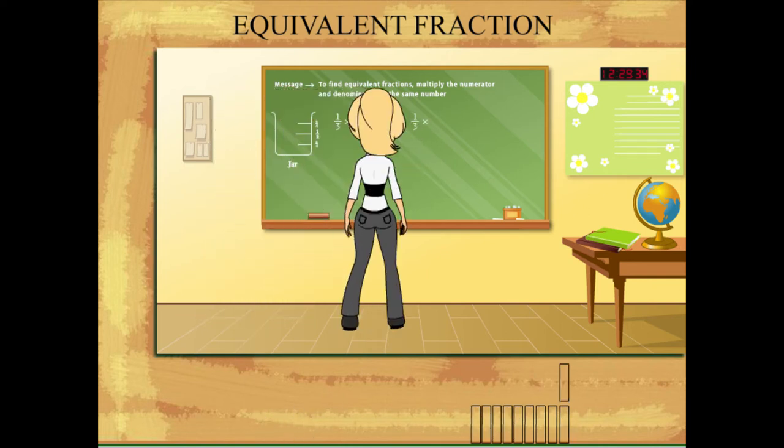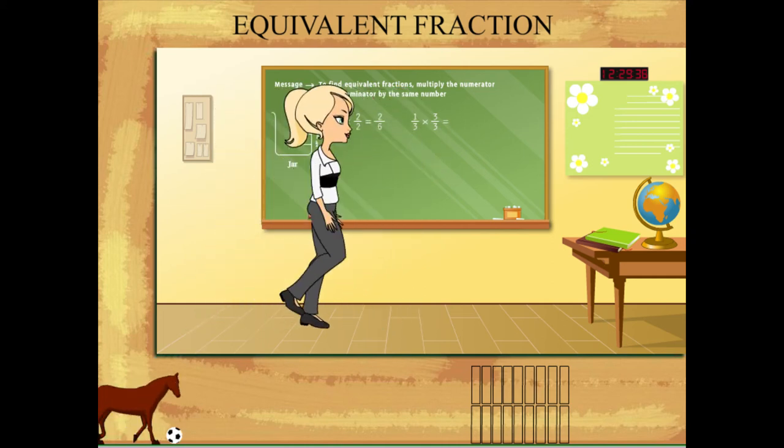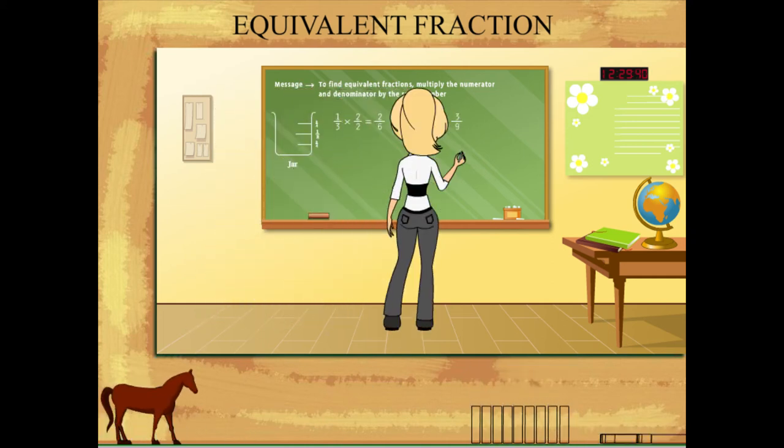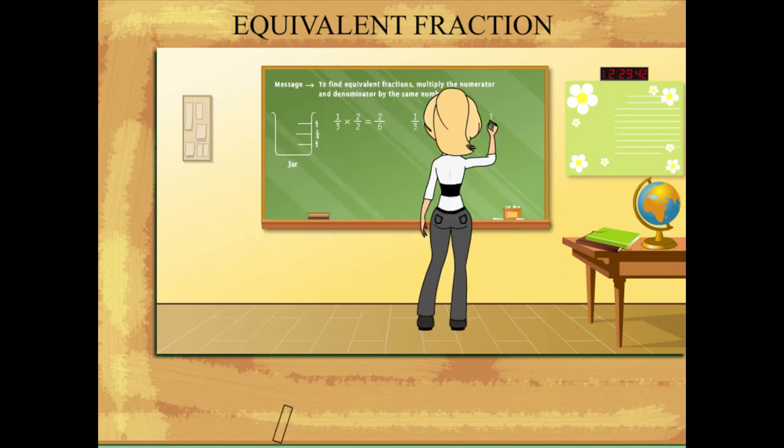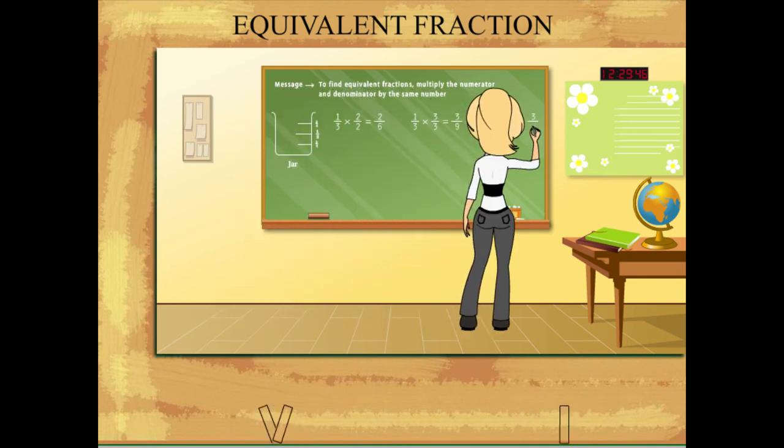Similarly, 1 upon 3 into 3 upon 3 is equal to 3 upon 9. Therefore, 1 upon 3 equals 2 upon 6 equals 3 upon 9.